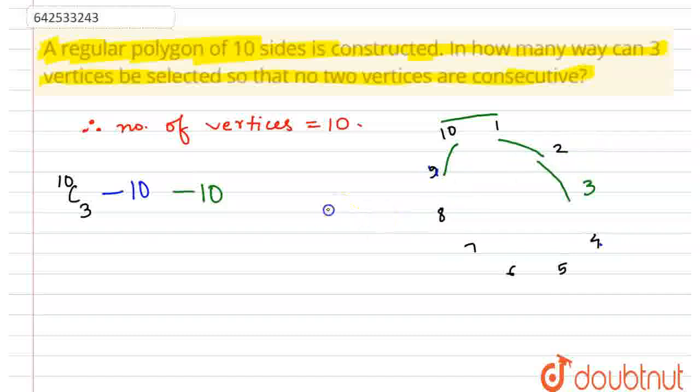So whenever we have selected 2 vertices which are consecutive, say 10 and 1, then there are only 6 possibilities left and from this 1 should be chosen.